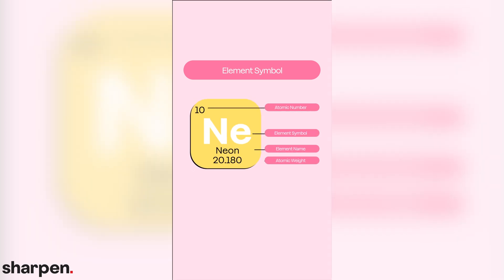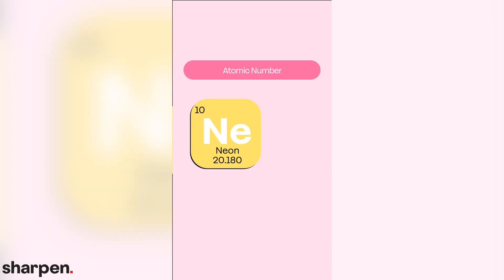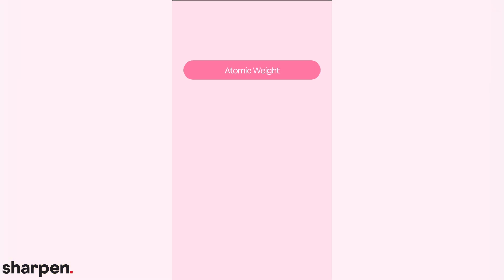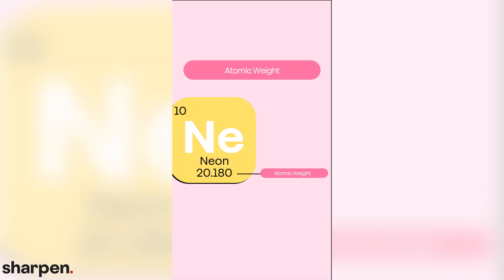Let's look at neon to learn how the periodic table works. You will see the element name somewhere in the block, as well as the symbol — a capital N and lowercase e represent neon. There will also be a number above the symbol. This is the atomic number, or the equal number of protons and electrons when the element is neutral. In neon's case, that number is 10, so there are 10 protons and electrons in neon when the element is neutral. There is another number below the atomic symbol — this is the atomic weight, or the average weight of all the element's isotopes. We always measure these in atomic mass units, or AMUs. Neon's atomic weight is 20.180 AMUs.